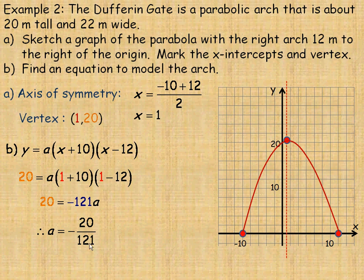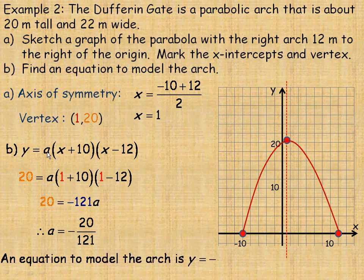Dividing both sides by negative 121, we get a equals negative 20 over 121. So the equation modelling the arch is y equals negative 20 over 121 times x plus 10 times x minus 12.